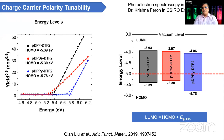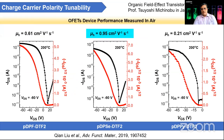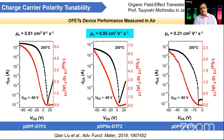By changing different flanking groups — furan or selenophene — you can see how the LUMO values change slightly. The HOMO goes very low, which is the best sign for getting highly stable devices. These three polymers were tested under two conditions — some devices inside the glovebox and some in air. In air, they show very typical P-type transistor behavior.